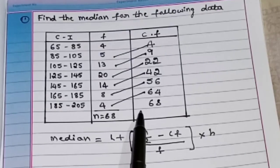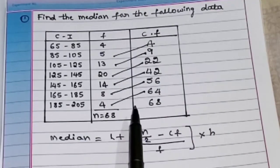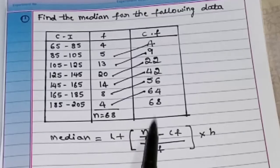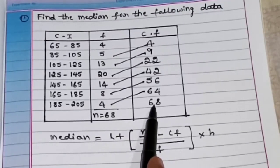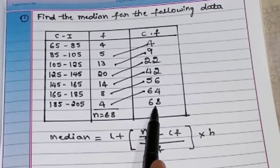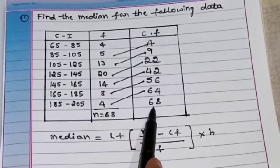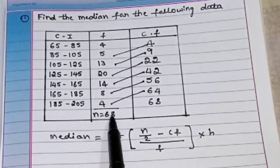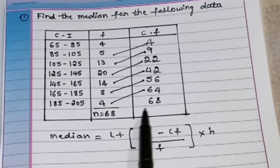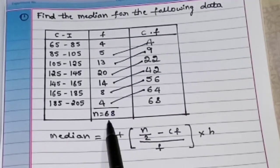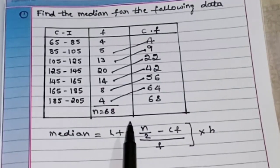To verify the cumulative frequency, just observe the last cumulative frequency. The last cumulative frequency is 68. The total number of frequencies added should equal n. Here n is 68 and the last cf is 68 — they match. So now I will write the cumulative frequency.